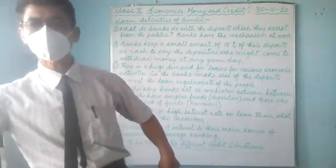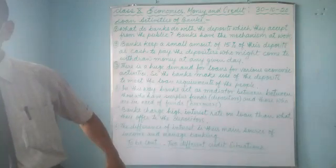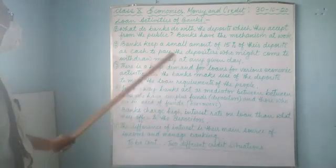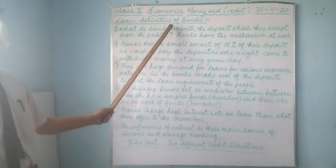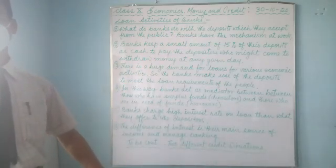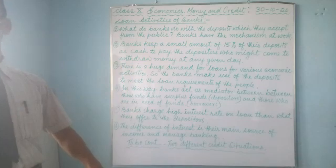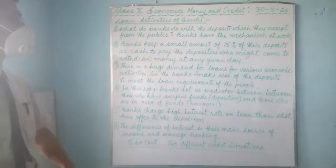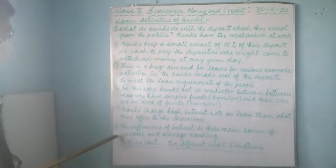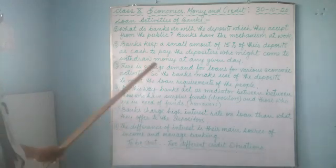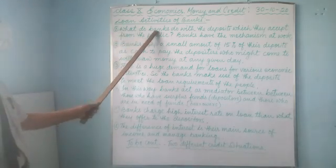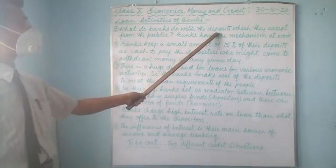Welcome back to the class. Let us continue our lesson in economics. We are doing money and credit, and here the loan activity. This is the subtitle: loan activities of the banks. So in what process will the bank provide loans and how do they manage the banking system? Here we'll learn a little bit. There are altogether six points I've written over here — we'll go through them one by one.